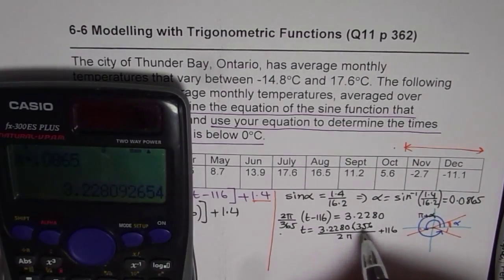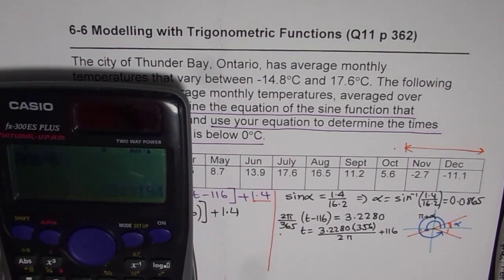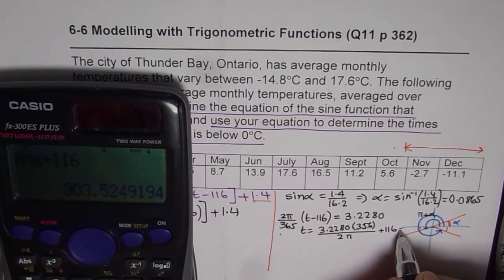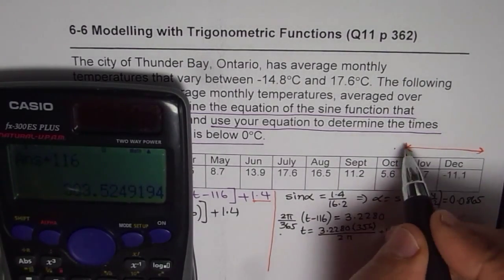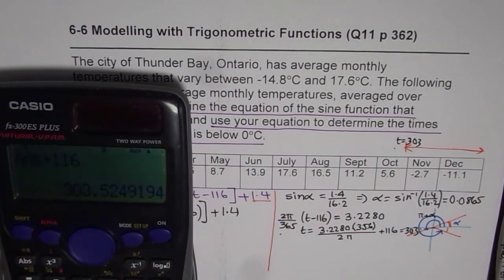So we will times, let me write in brackets. So times 365, 365 equals to divided by 2 divided by pi equals to plus 116 equals to 303. So we get t equals to 303. So 303 is here. So we get t equals to 303 is our 0 here. That's one value which we got.